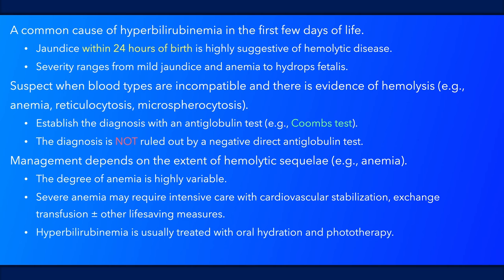Oral hydration and phototherapy, if needed, are usually sufficient for the treatment of hyperbilirubinemia. Less commonly required options that may be necessary if phototherapy alone fails include intravenous fluid supplementation, intravenous immunoglobulin, and exchange transfusion. Monitoring of bilirubin levels without ongoing treatment is usually continued until there is a downward trend in the safe zone.